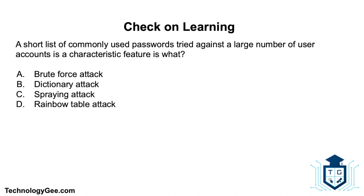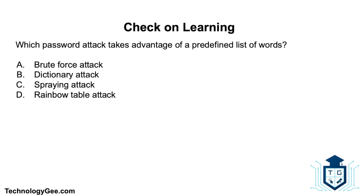Now let's do some check on learning. First question: a short list of commonly used passwords tried against a large number of user accounts is a characteristic feature of what? Is it a brute force attack, a dictionary attack, a spraying attack, or a rainbow table attack? The correct answer is a spraying attack.